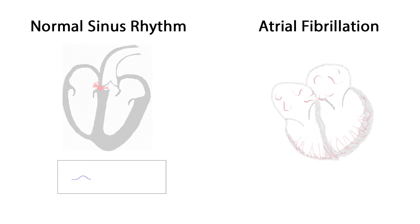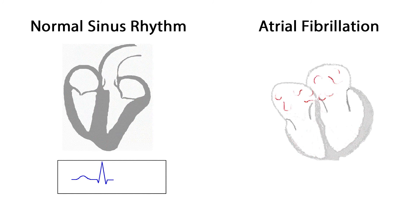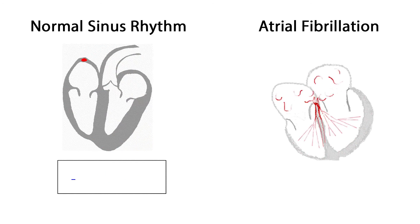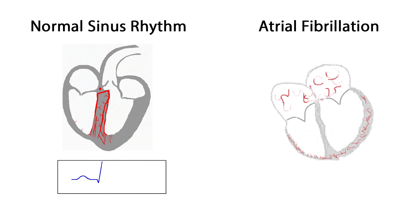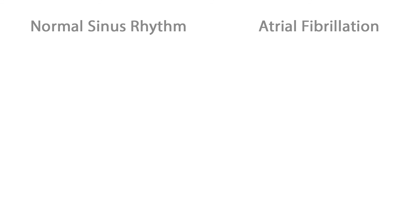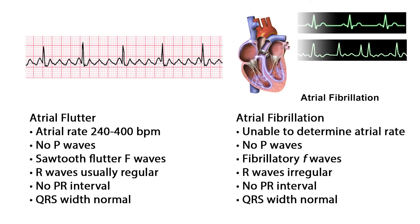Both atrial flutter and AFib are common abnormal heart rhythms — both types of supraventricular tachycardia, meaning a rapid heartbeat occurring above the ventricles. In AFib, the heart beats fast with no regular pattern. With atrial flutter, the heart beats fast but in a regular sawtooth pattern. In atrial flutter, the atrial rate is between 240 to 400 beats per minute; in AFib, the atrial rate cannot be determined. Neither arrhythmia has P waves — atrial flutter has sawtooth flutter F waves, and AFib has fibrillatory f waves. The R waves in atrial flutter are usually regular, but in AFib they are irregular. Neither arrhythmia has a PR interval, but the QRS width on both is normal.